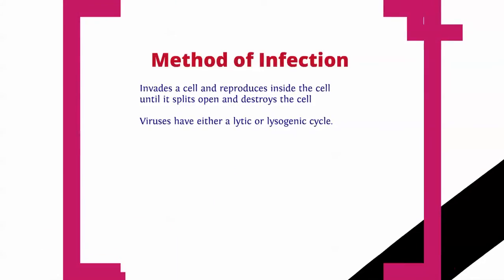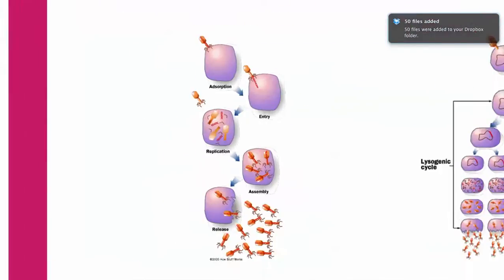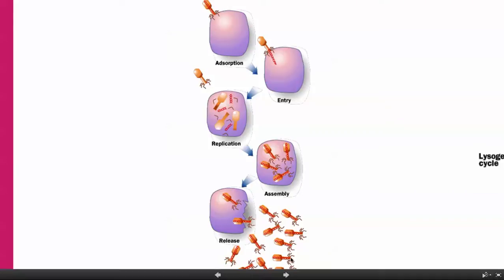Another method of infection: viruses invade the cell and reproduce inside it until it splits open and destroys the cell. They have either a lytic or a lysogenic cycle. In the lytic cycle, the virus injects its DNA into the cell, and that DNA tells the cell to make more viruses. The cell works like a factory assembling viruses until it can't hold anymore, then it bursts open, the cell dies, and all the viruses are released into the infected organism.